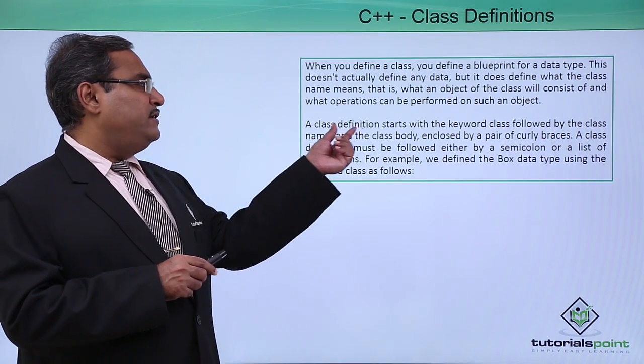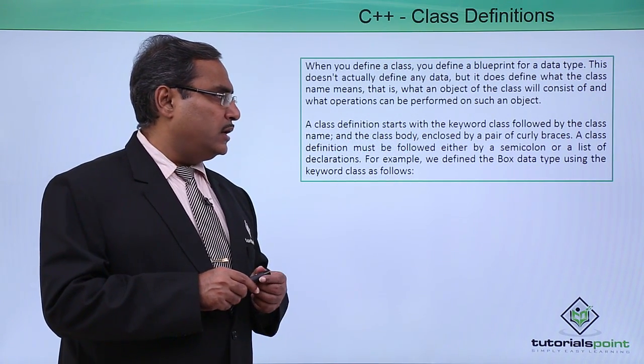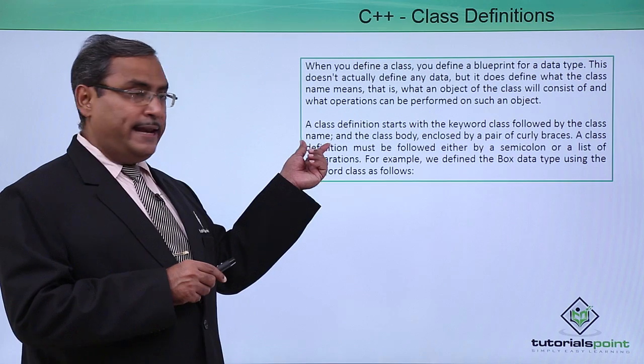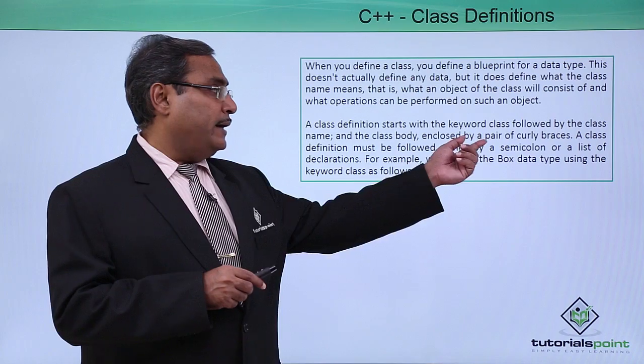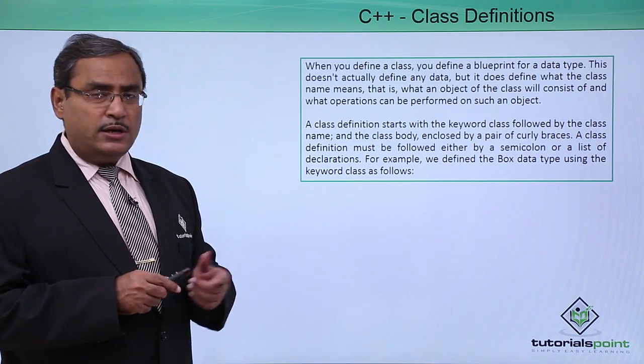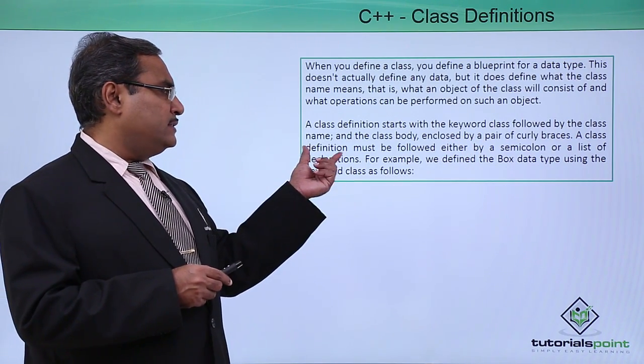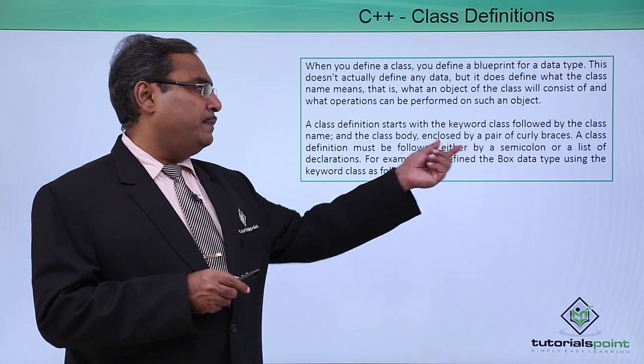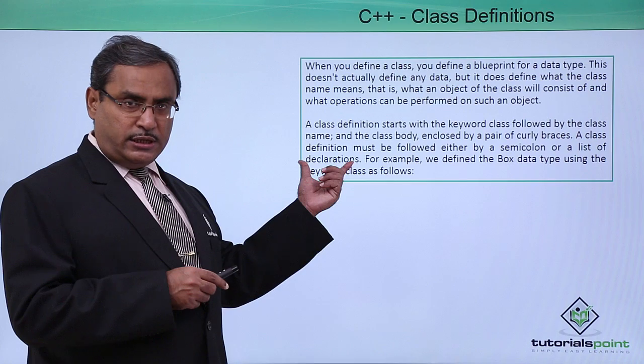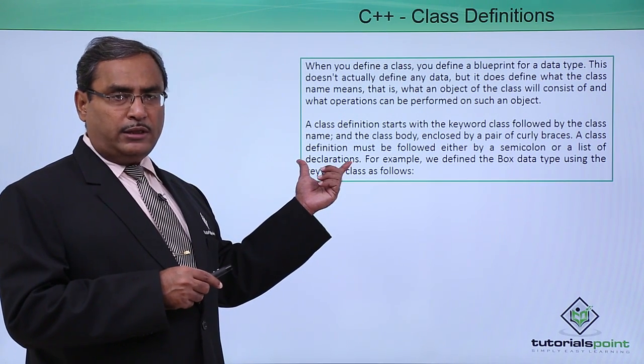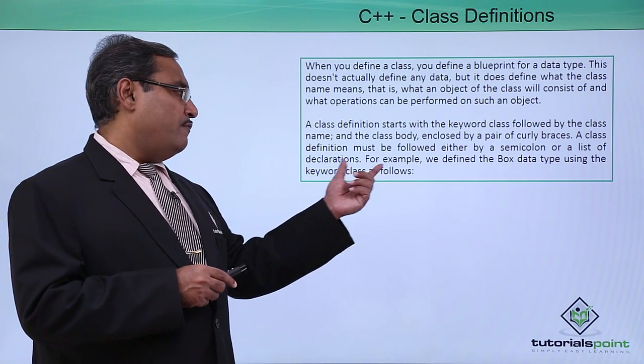A class definition starts with the keyword class followed by the class name and the class body. The class body should be enclosed by curly braces. A class definition must be followed either by a semicolon or a list of declarations containing methods and messages.